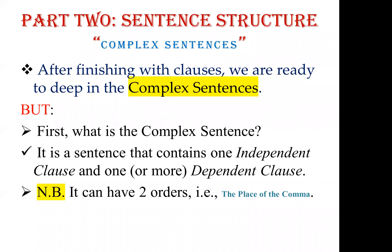Now we are ready to go deeper into the complex sentence. A complex sentence is composed of two things: an independent clause and a dependent clause. It is a sentence that contains one independent clause and one or more dependent clauses. If you understand clauses and subordinating conjunctions well, the complex sentence is not difficult — it is simply an independent clause joined with a dependent clause.